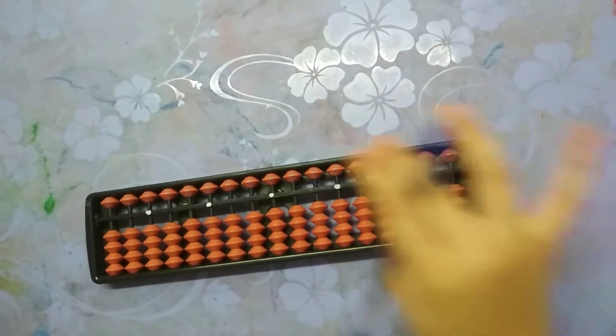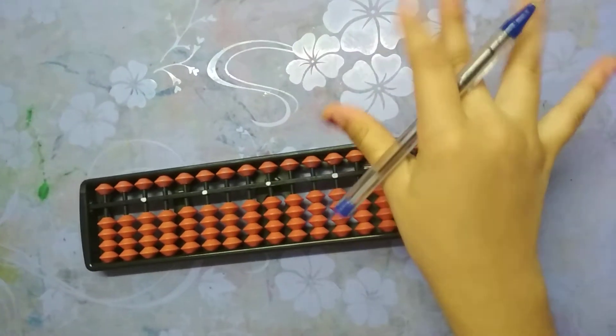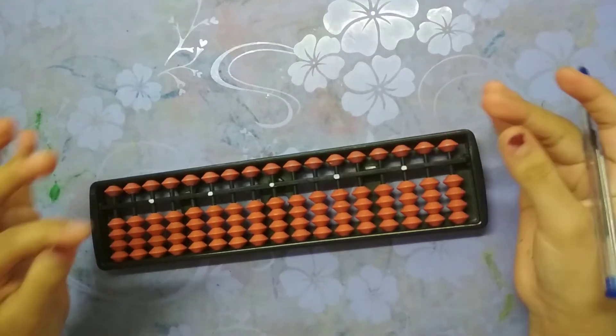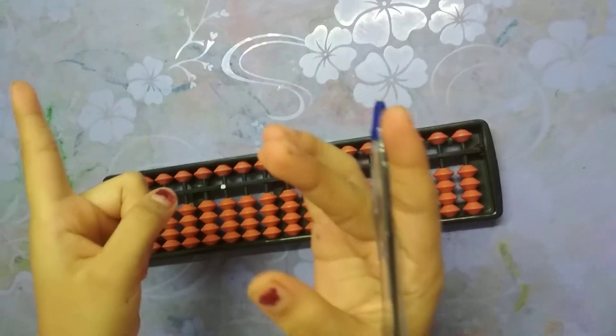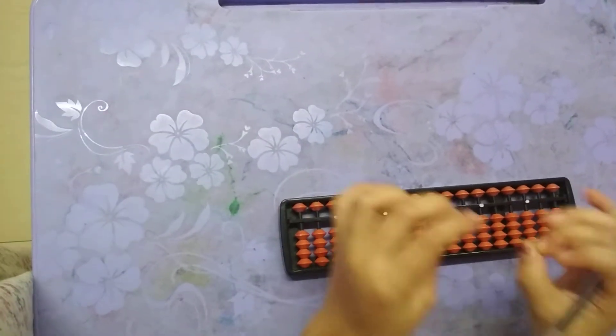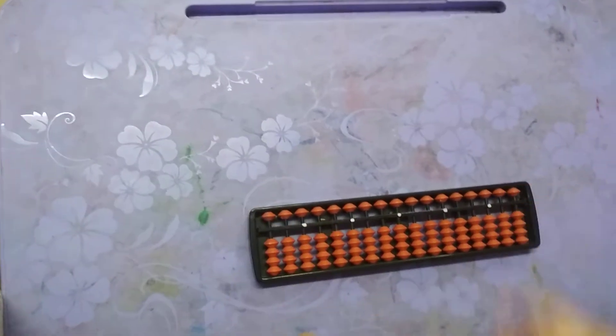As you can see, I have the abacus ready, pencil also ready. Now we are going to revise the things we learned in the previous video. What we learned was digits.